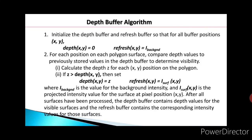Initially, the depth of all the pixels is zero and the intensity is set to the background color of the X, Y plane. For each position on each polygon surface, compare depth values to previously stored values in the depth buffer to determine visibility.